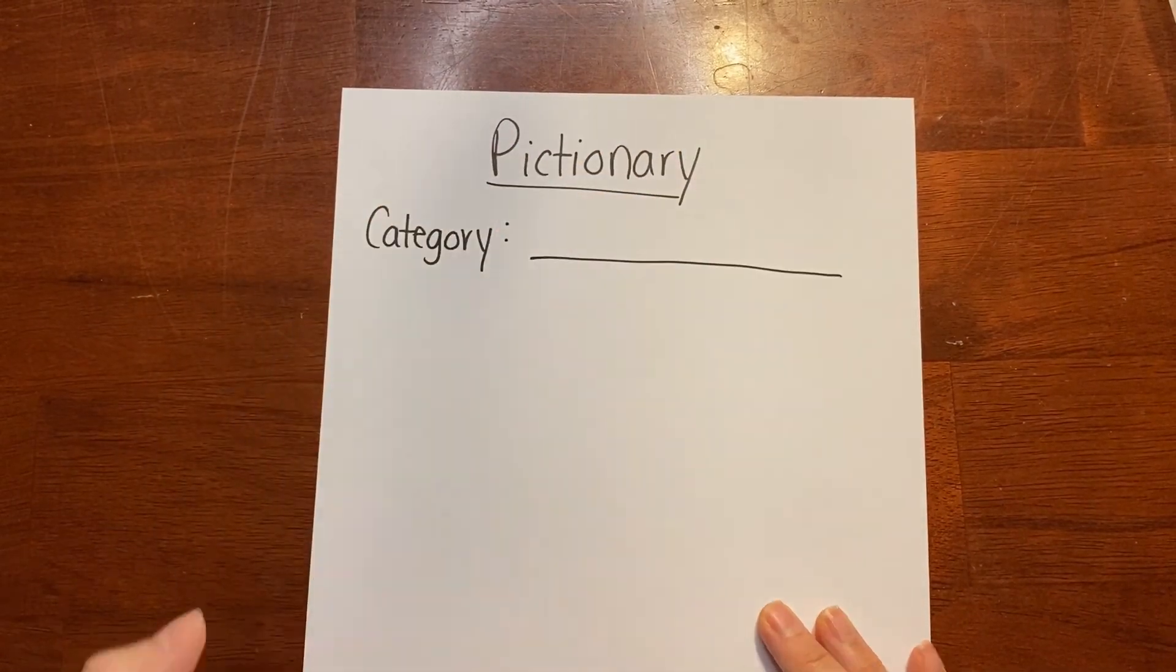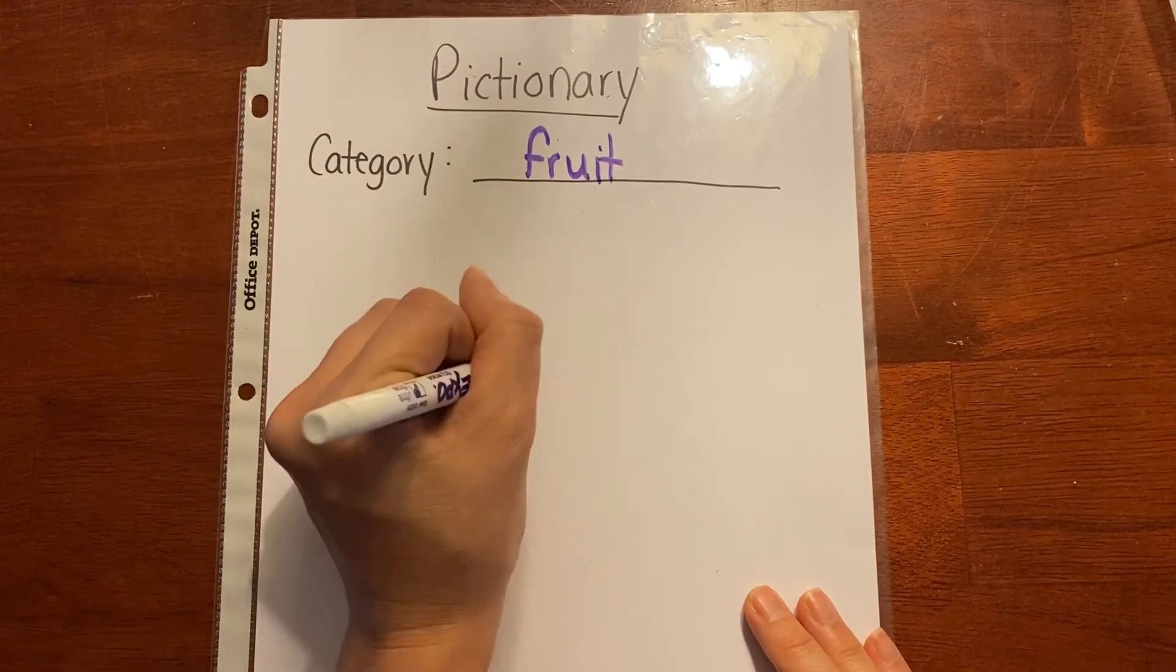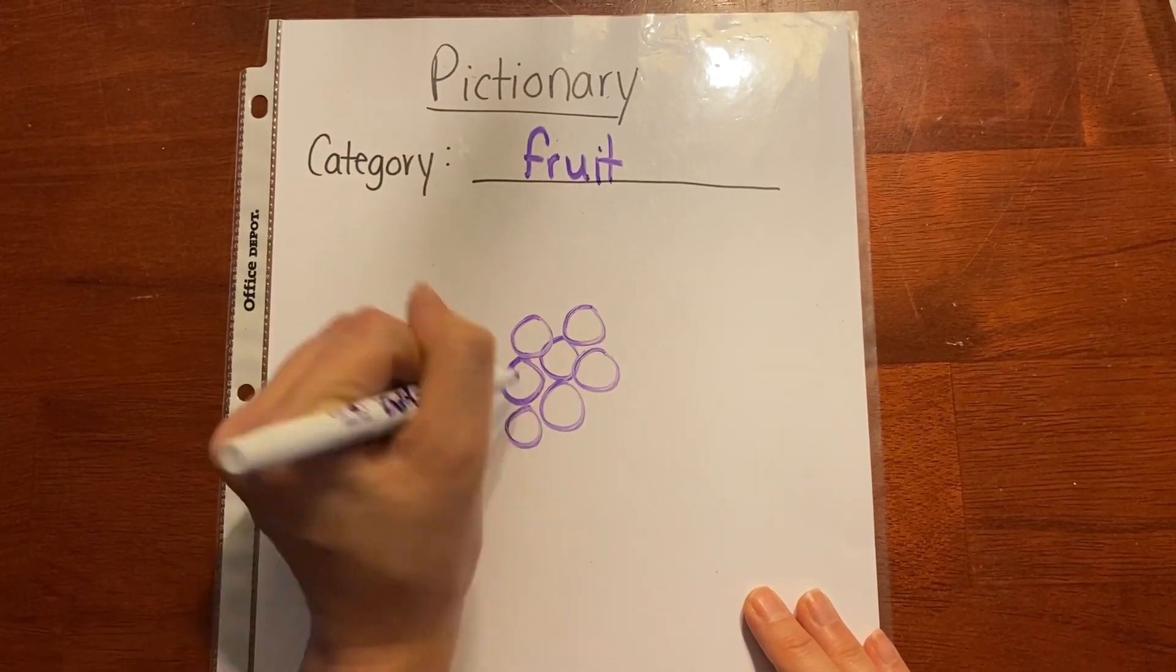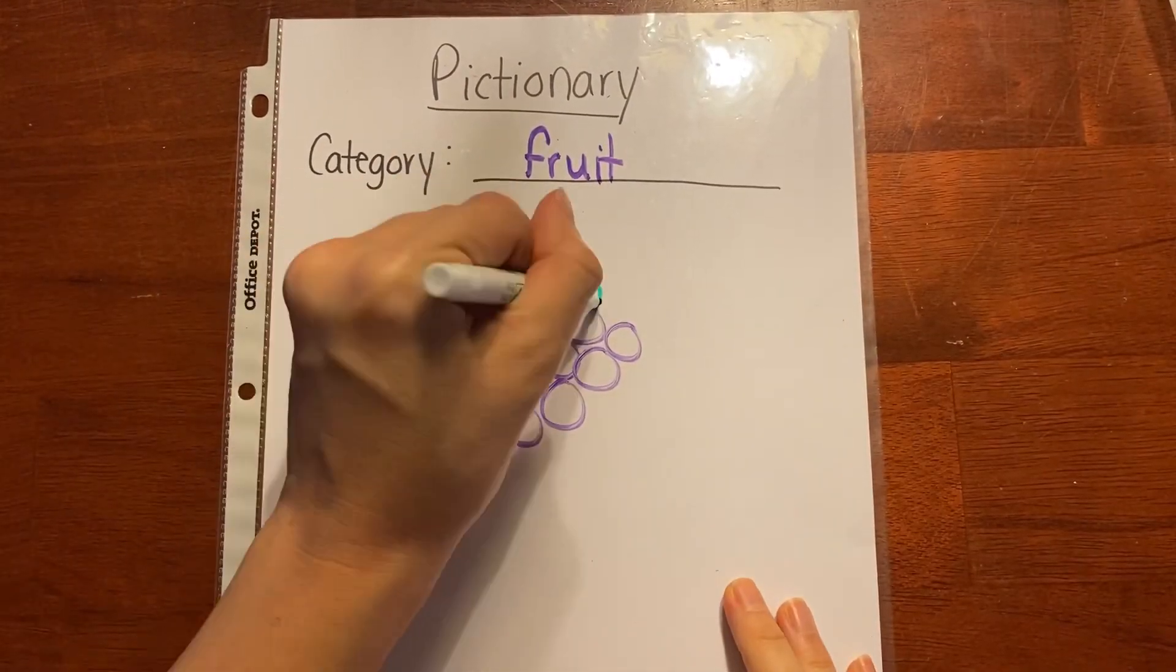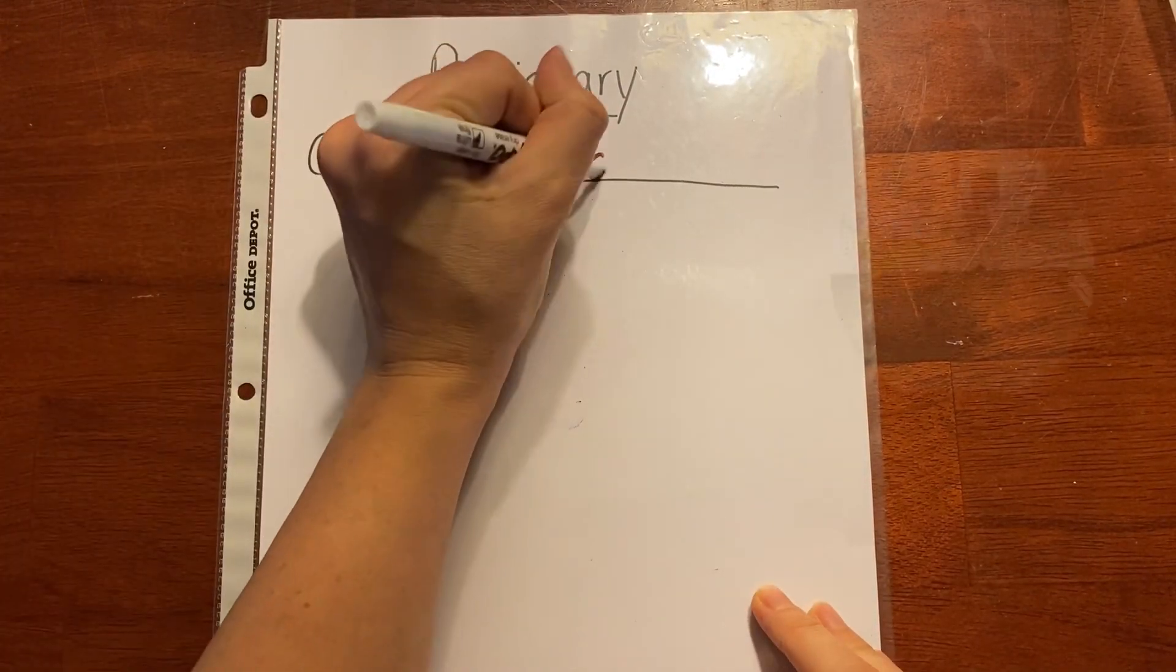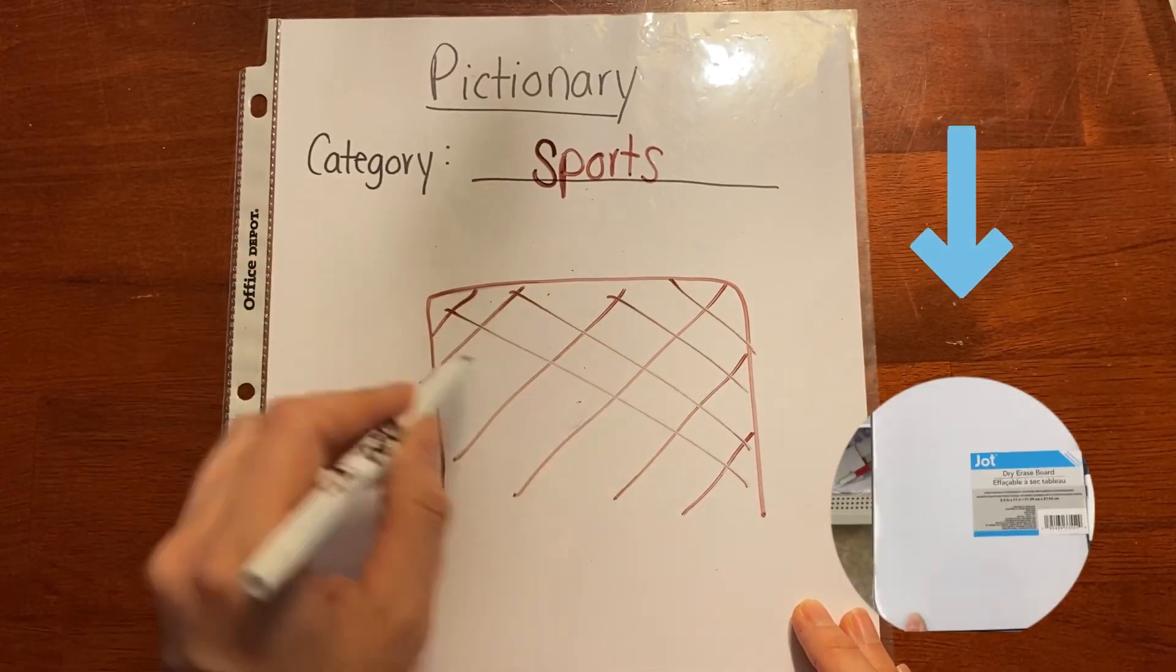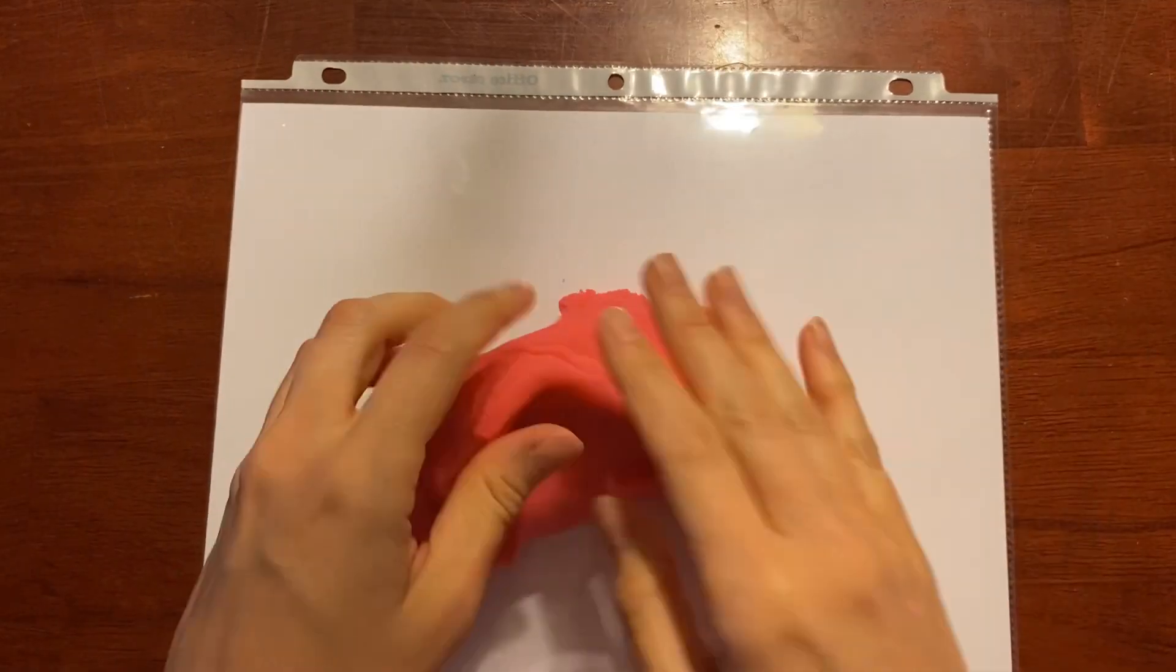Number three, Pictionary. We love Pictionary in my house. And in this case, you'll notice I'm not using the pocket pouch. I'm just using a sheet protector. So if you can't find that pocket pouch and you have sheet protectors, it works the same. You can even just get a regular old marker board, which they also have at the Dollar Tree to use.